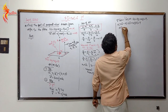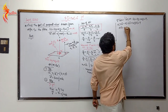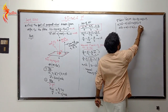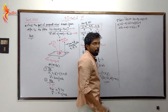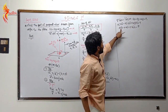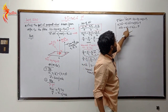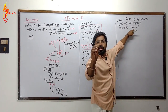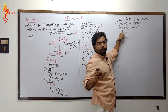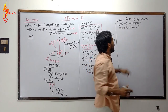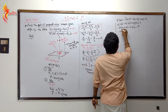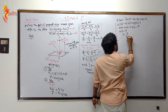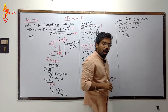That gives us 25 lambda plus 4 lambda plus 16 lambda equals 9, which is 45 lambda equals 9. So lambda equals 9 divided by 45, which equals 1 by 5.